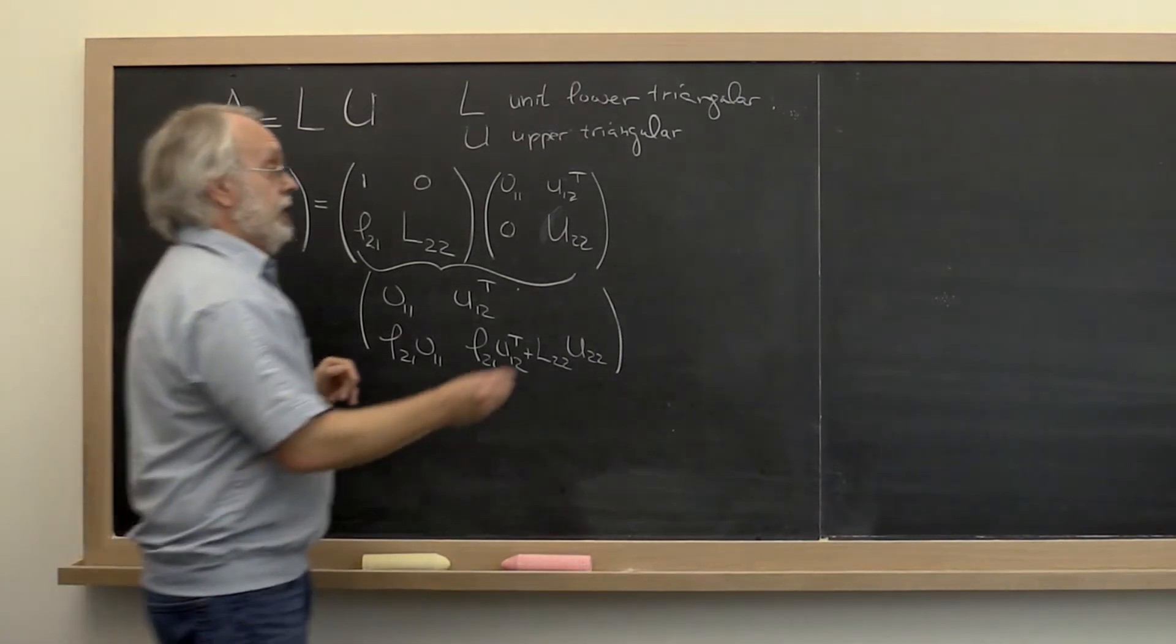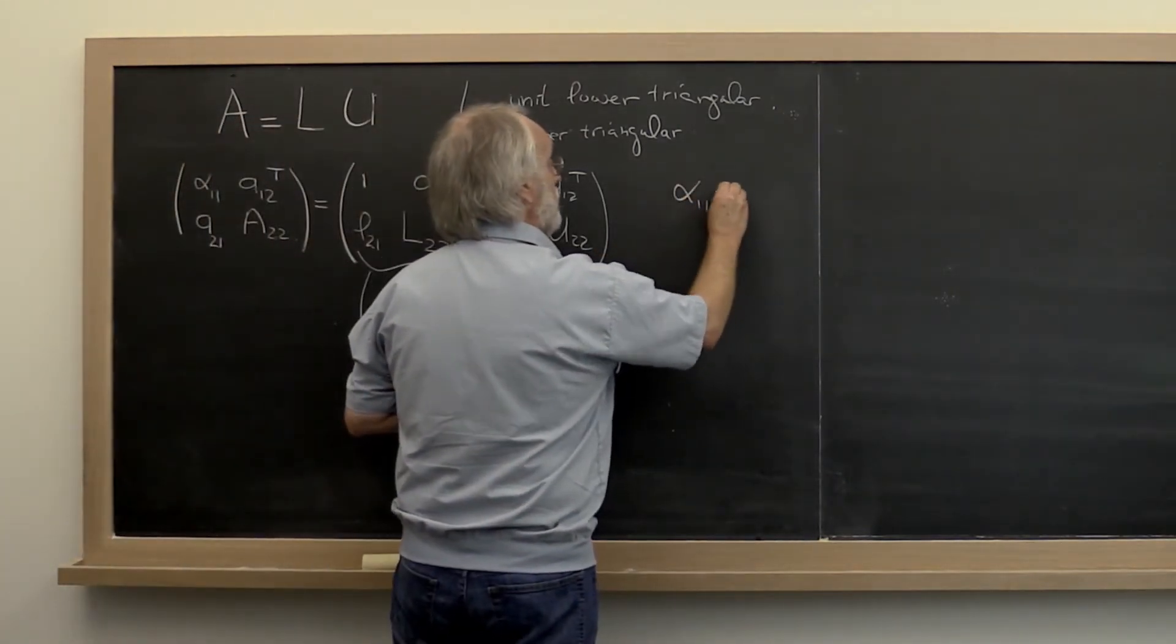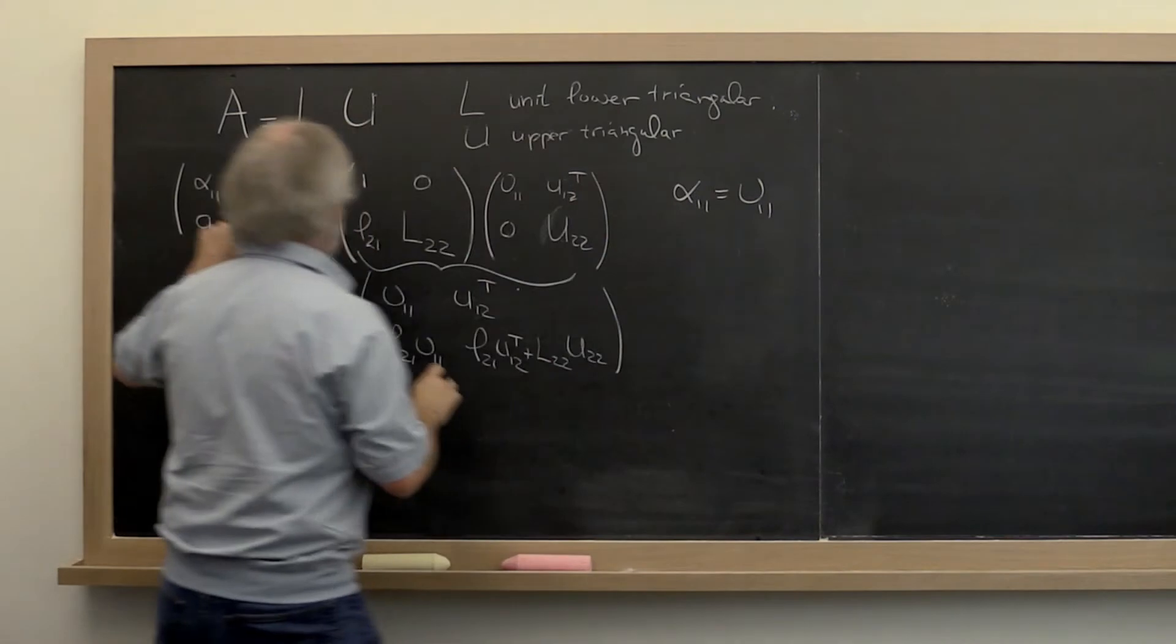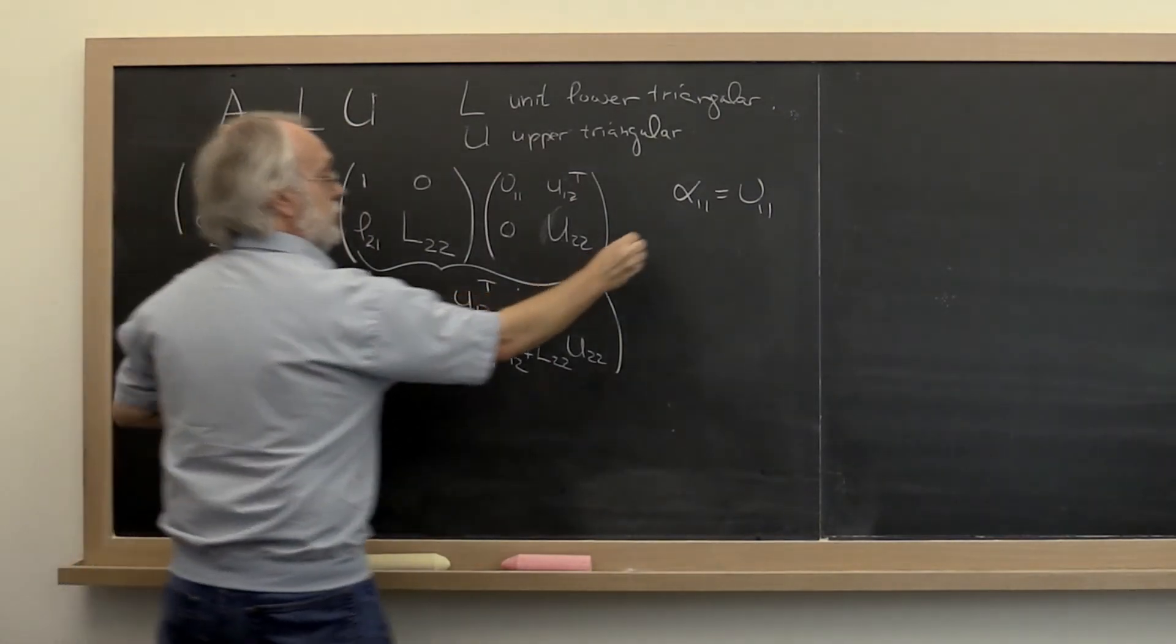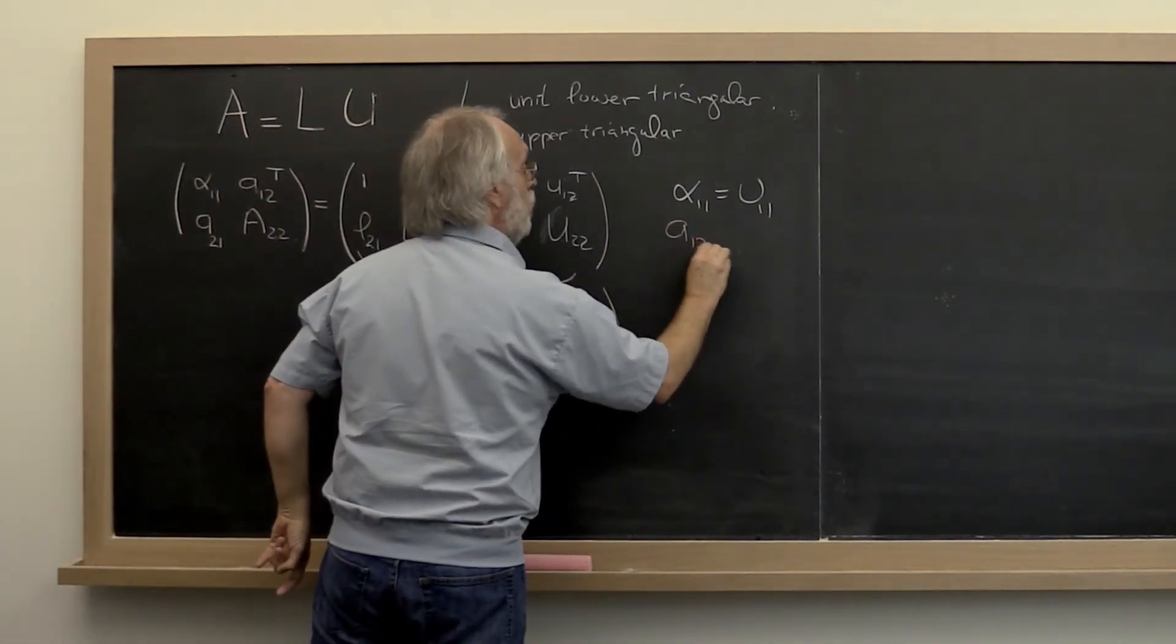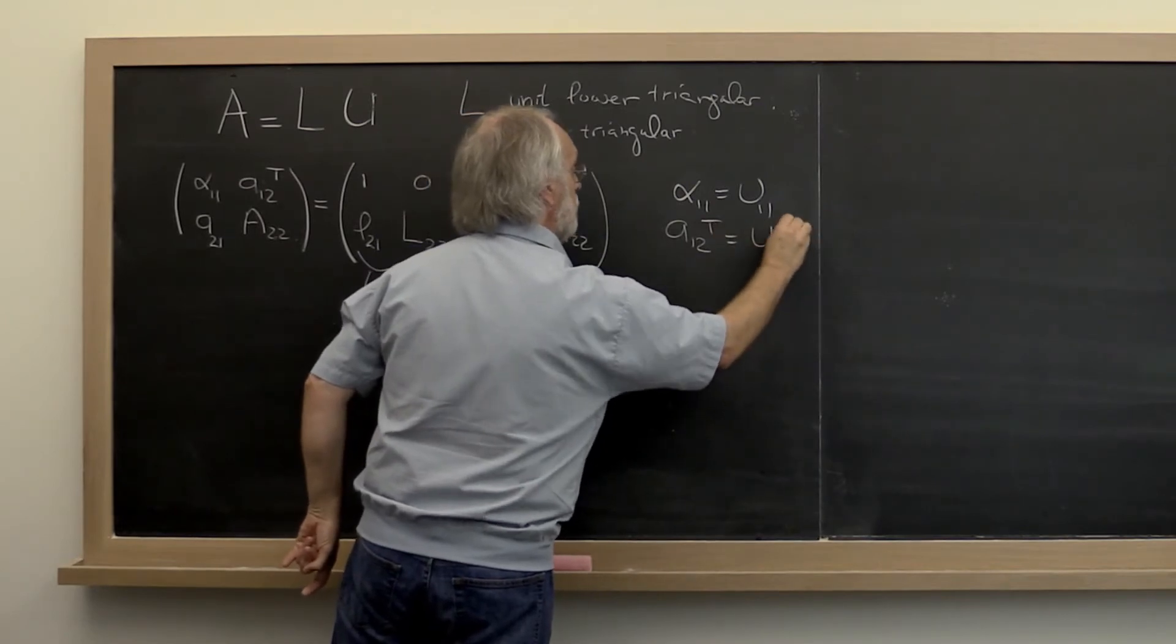So we conclude that alpha 1 1 must be equal to upsilon 1 1. A 1 2 transpose must be equal to U 1 2 transpose.